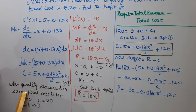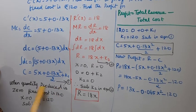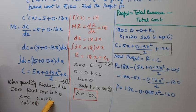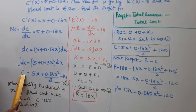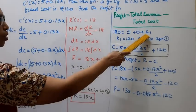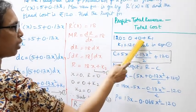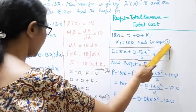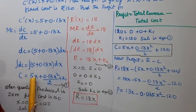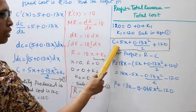When quantity produced is 0, the fixed cost applies. Substituting x = 0, C = 120 into equation 1: 120 = 0 + 0 + K1, so K1 = 120. Therefore C = 5x + 0.13x²/2 + 120.